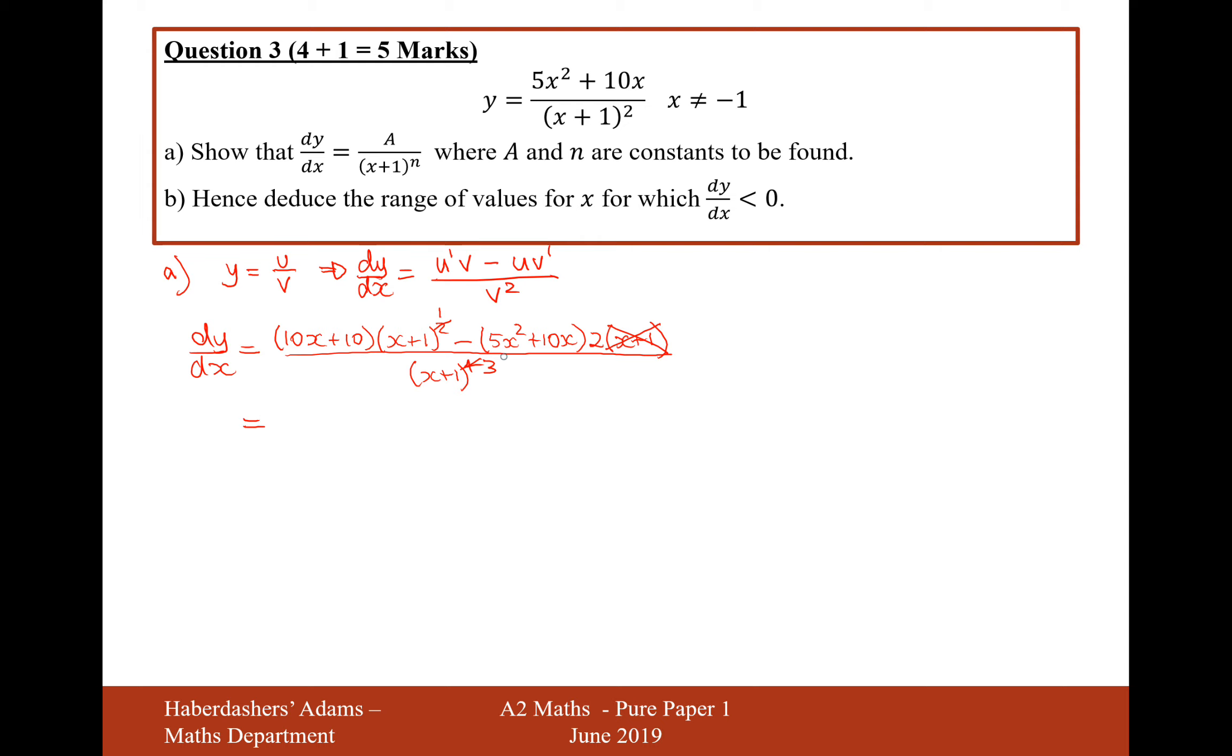And what might be a sensible thing to do now as well is to expand the brackets on the numerator. So it's going to be 10x times x is 10x squared. Plus 10x times 1, that'll be 10x. Plus another 10 times x, that's another 10x. And then 10 times 1 is just 10.